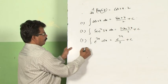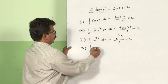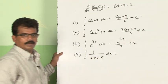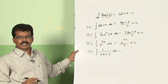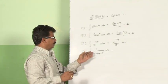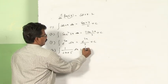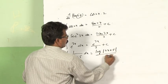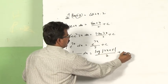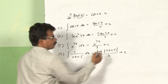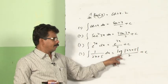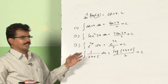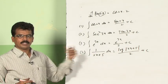Similarly, integral of 1 by (2x plus 5) dx: the integration of 1 by x is log x. Therefore, integral of 1 by (2x plus 5) dx is equal to log|2x plus 5| divided by 2 plus c, because the derivative of (2x plus 5) is 2.